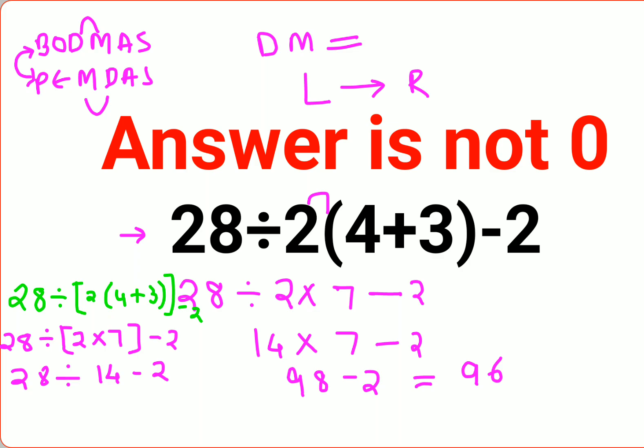So 28 divided by 14 that gets you 2 minus 2, and in this scenario the answer comes out to be 0. But since the 2 was not given in a bracket, this entire thing was not in a bracket. So the answer to this question is supposed to be just 96.